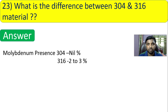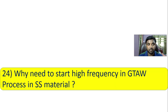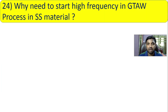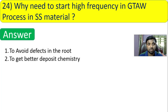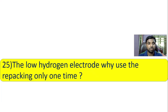Question 24: why is high frequency needed to start the GTAW process on stainless steel material? Two reasons: first, to avoid defects in the root; second, to get better deposit chemistry, meaning better chemical composition and weld quality.